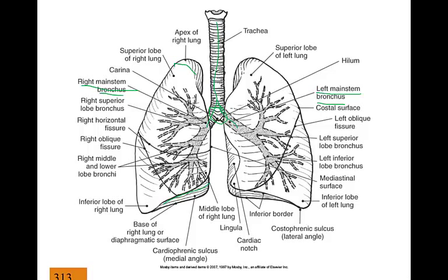We also have the hilum — an opening to the lungs. We need this opening because the trachea, all the vessels, arteries, and everything need to go into the lungs. That opening is called the hilum.